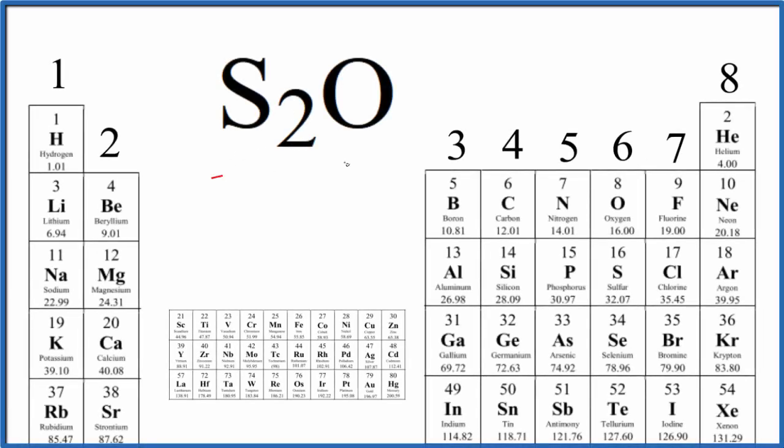To write the Lewis structure for S2O, let's first count up the valence electrons. Sulfur, that's in group 16, sometimes called 6A. It has six valence electrons, and we have two sulfur atoms, so we'll multiply that by two.